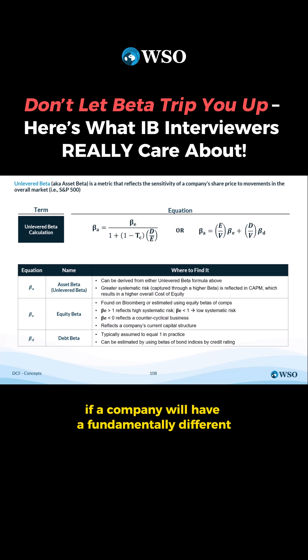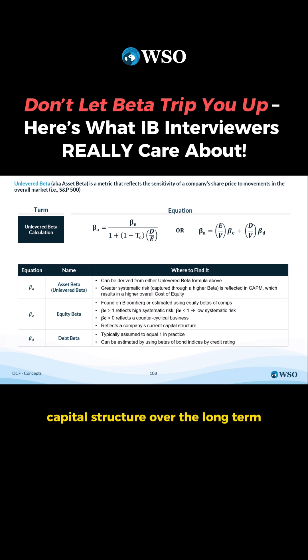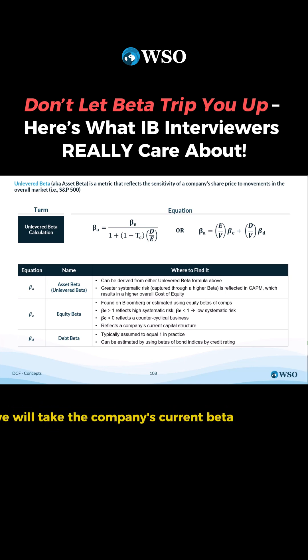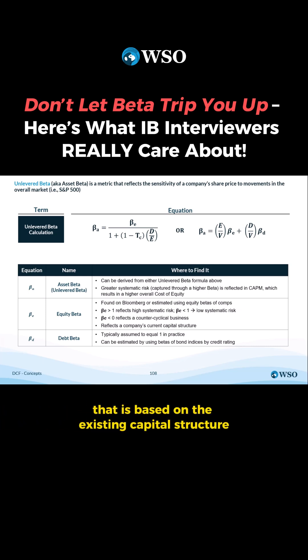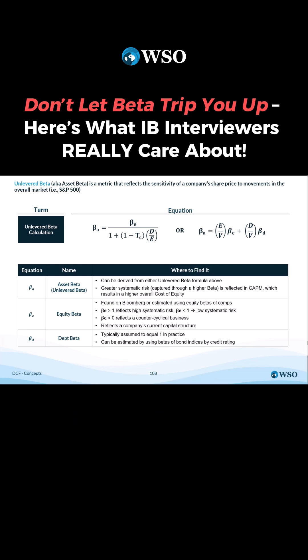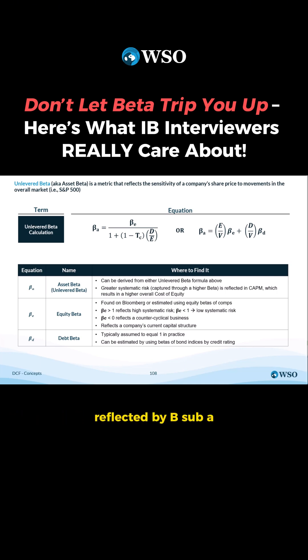If a company will have a fundamentally different capital structure over the long term than it has today, we need to do something called unlevering and relevering beta. We will take the company's current beta that is based on the existing capital structure — its levered beta reflected by B sub E in the formula — and use the formula to calculate an unlevered beta reflected by B sub A.